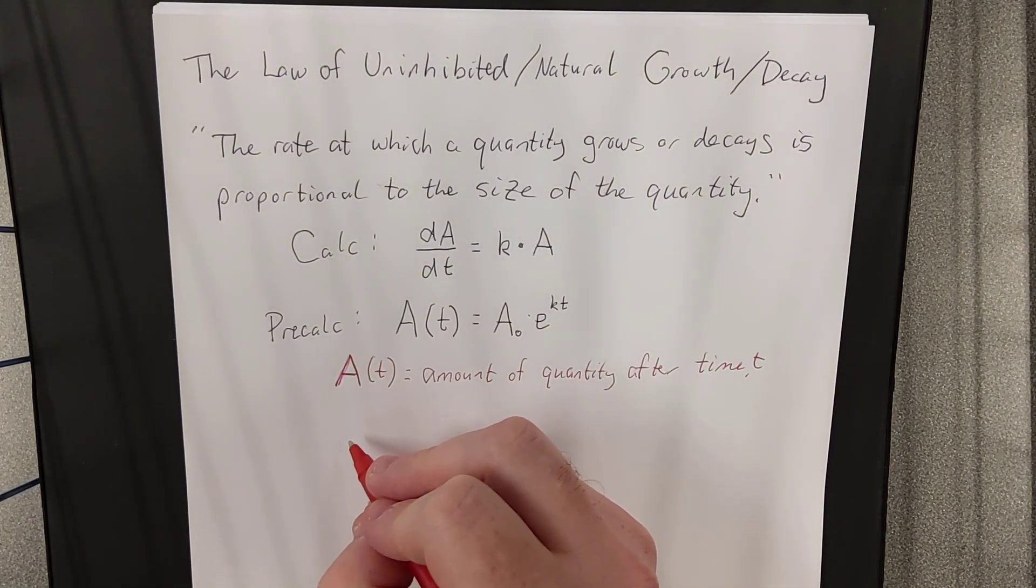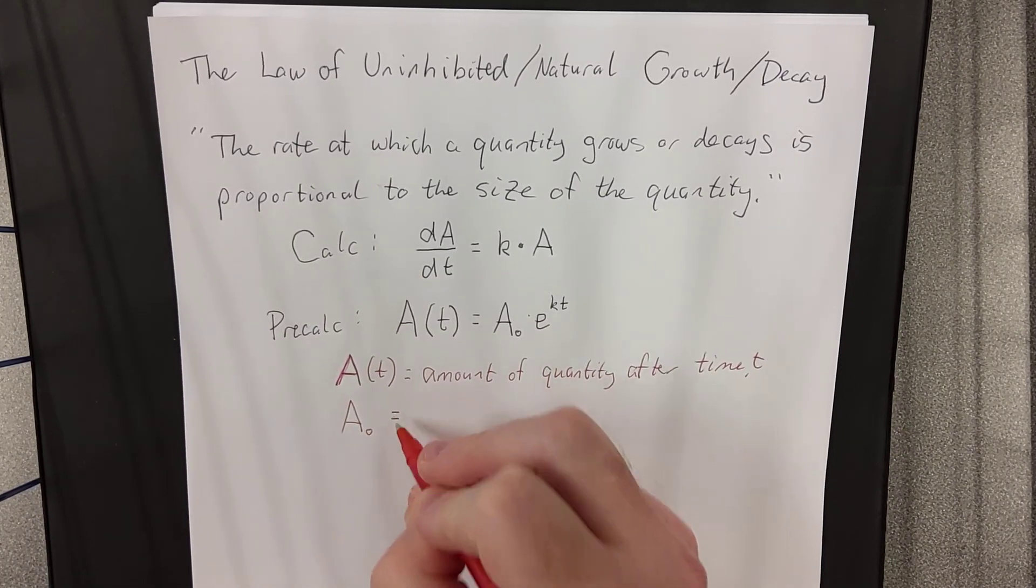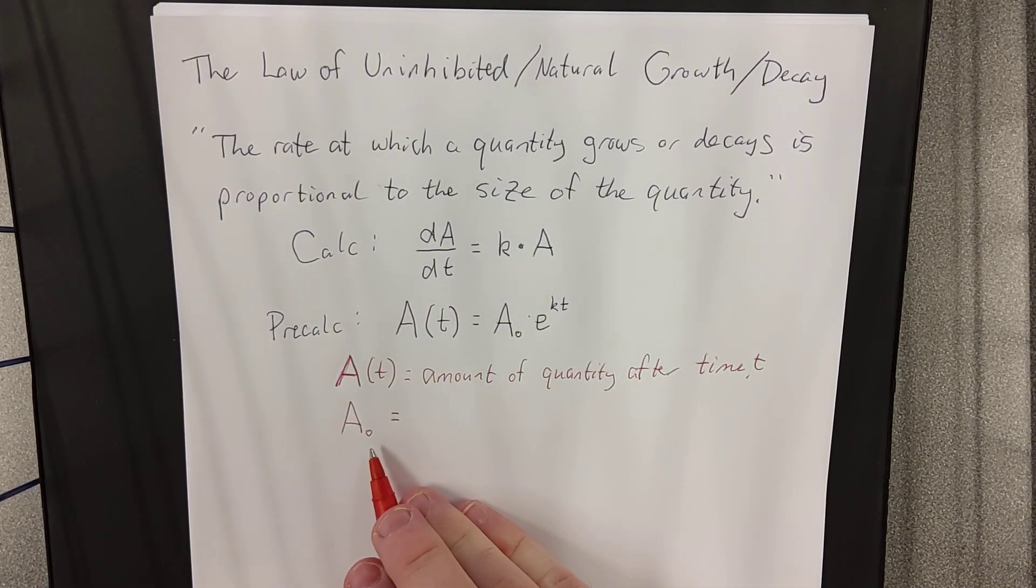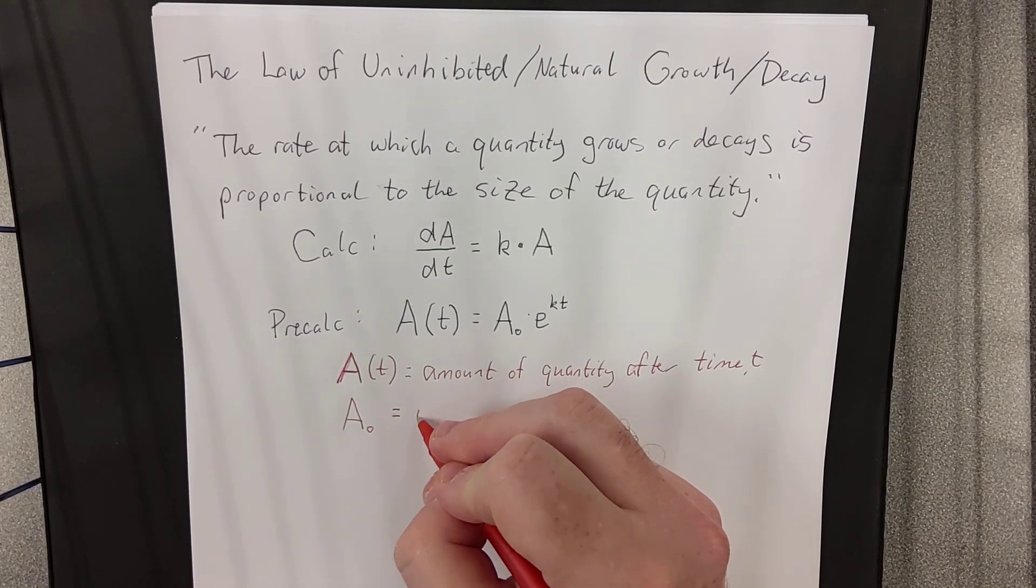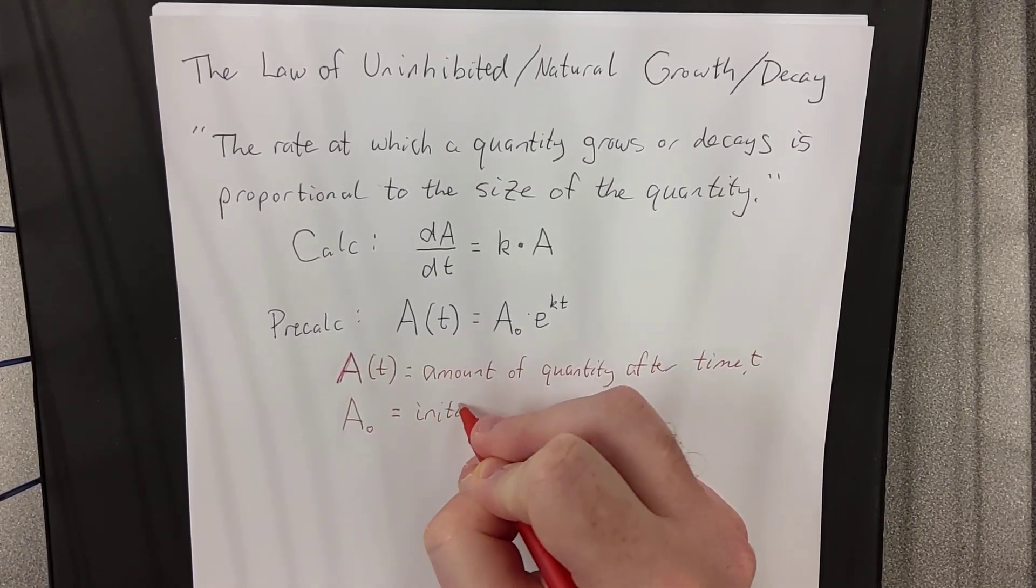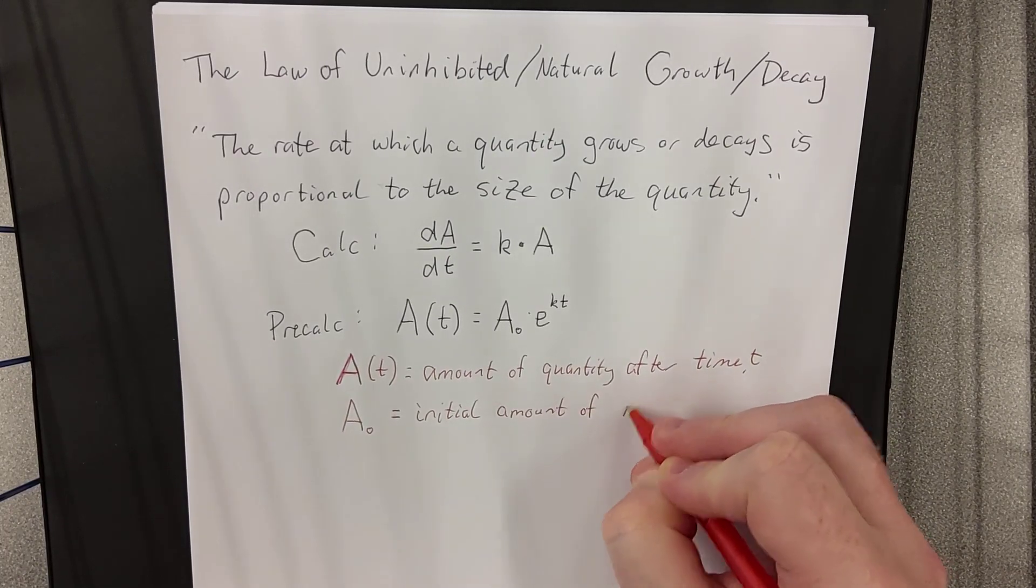That also takes us to our second quantity right here. This little subscript zero that gets used. You'll frequently see in chemistry and physics and a lot of the natural sciences refers to the initial amount of the quantity in question. So, this is the initial amount of A.